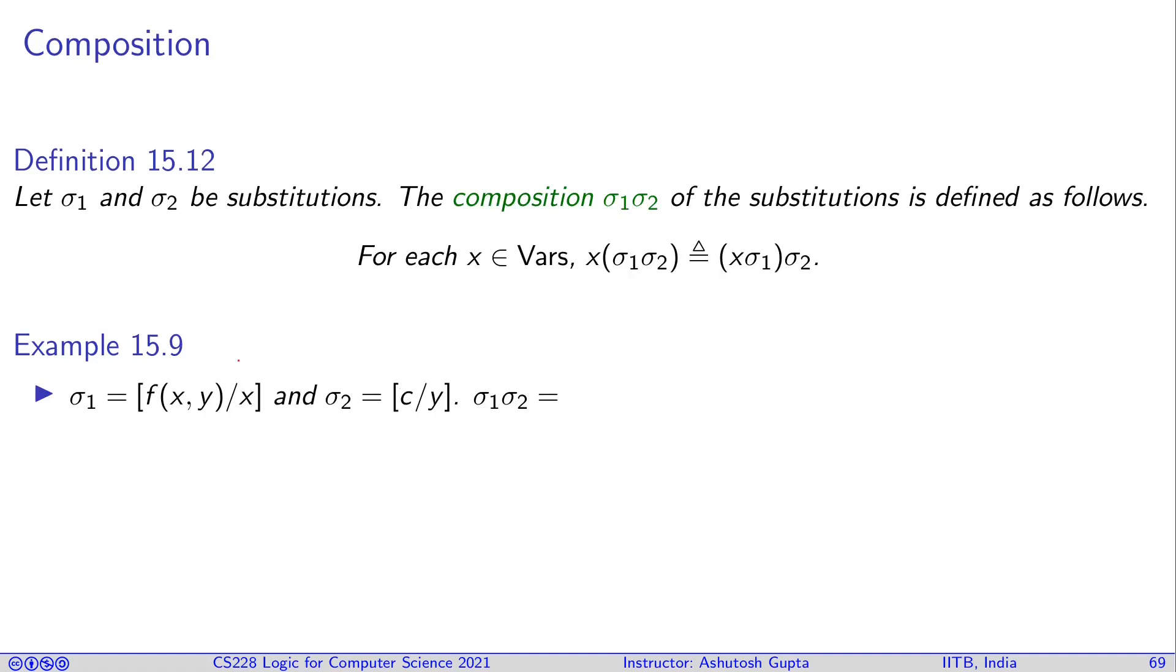Composition. If I give you two substitutions, both are functions, since they are functions, they can be composed - a function that takes a variable and returns a term t. If you take another substitution like sigma two, which also takes variables and maps into some term, you can first apply this, you get a term, and then in this term you apply again this substitution, and then you get something final, and that is called composition.